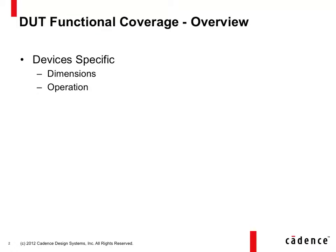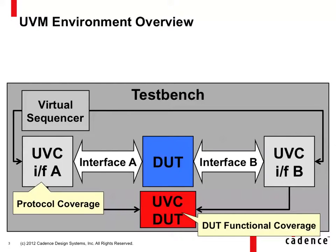We need to collect coverage that is related to device operation and dimensions, such as buffers, corner cases, cross-coverage, and things like that. As we have seen in our test bench, we are already collecting functional coverage that is protocol-specific in our interface UVCs. There you can measure if you have exercised all the different transaction types related to your protocol, for example, different burst types and so forth.